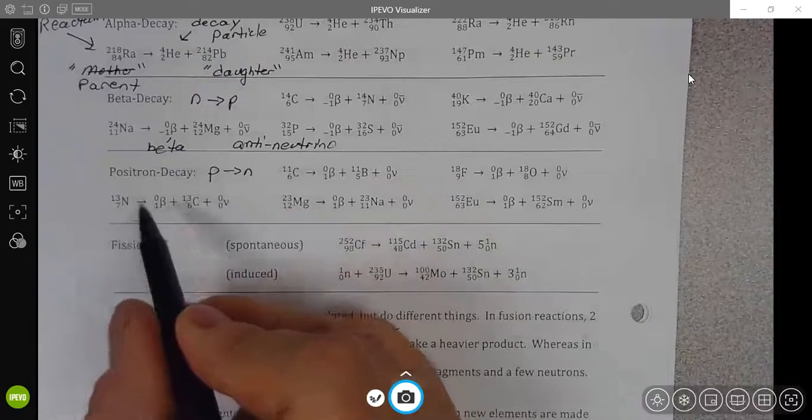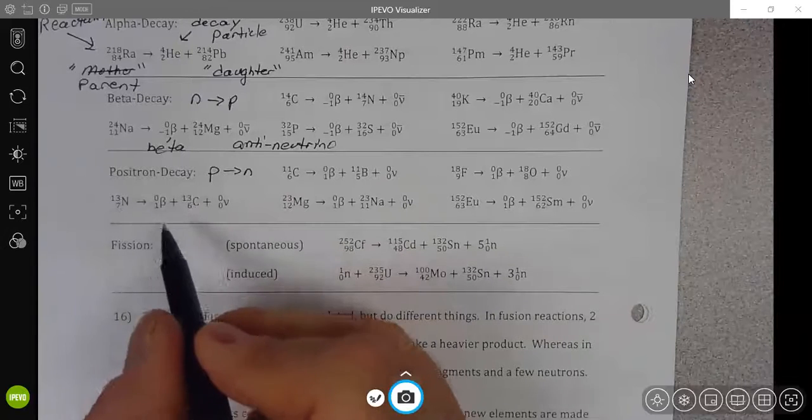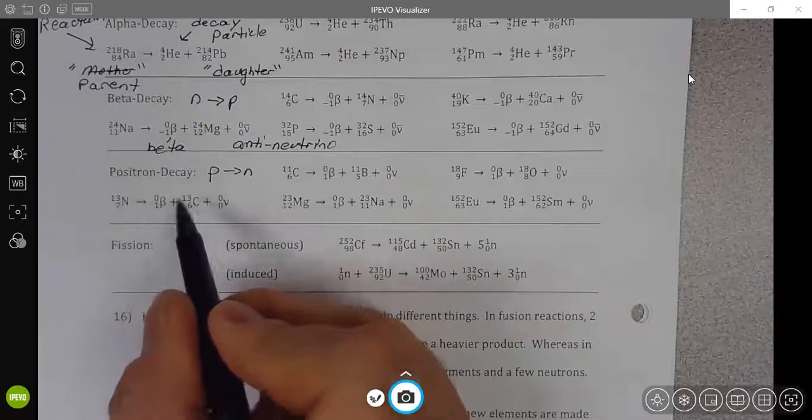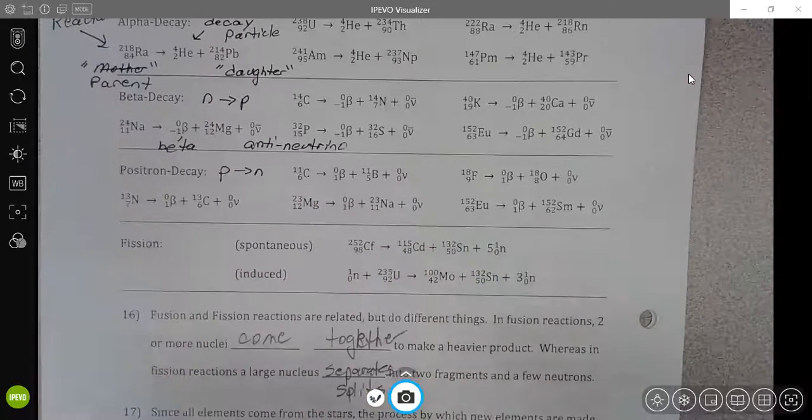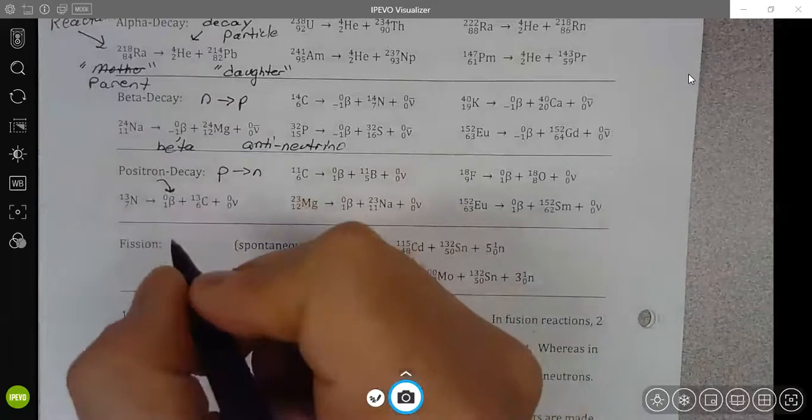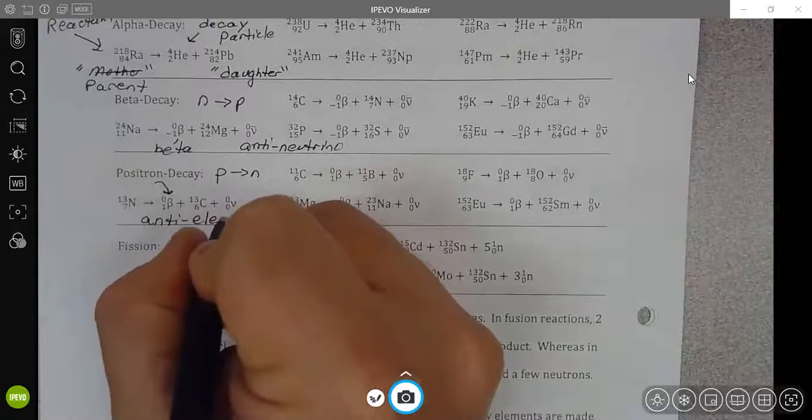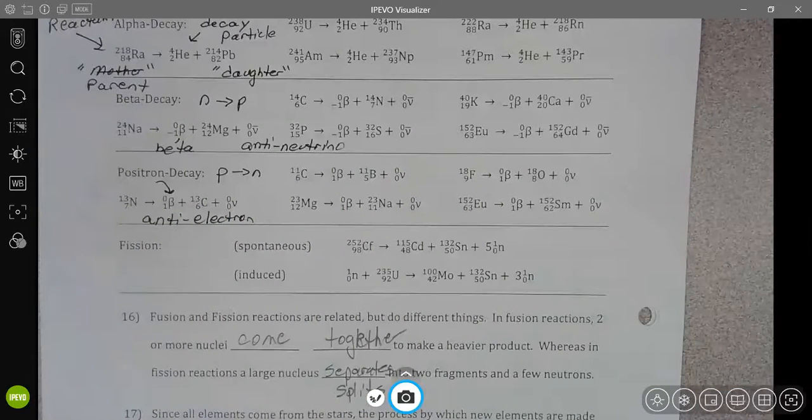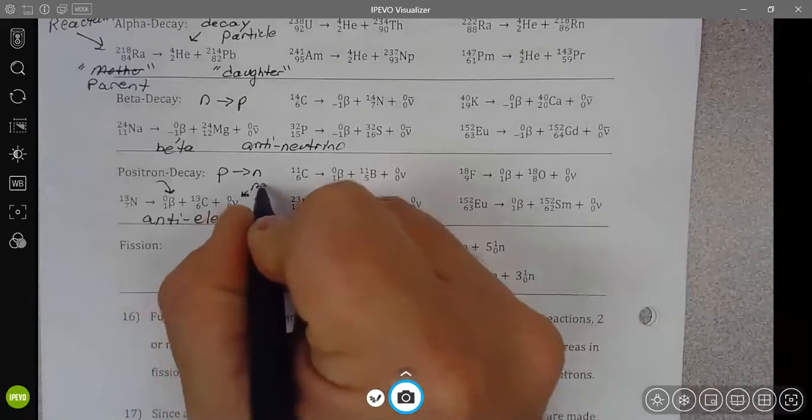So our mass number, our total number of protons and neutrons is constant. But we have lost one proton and gained one neutron. So when that proton turns into a neutron, we have to have something that carries that positive charge. And that's going to be the positron, which is this particle, which is also called an anti-electron. And that anti-electron then has to be balanced out by a neutrino.